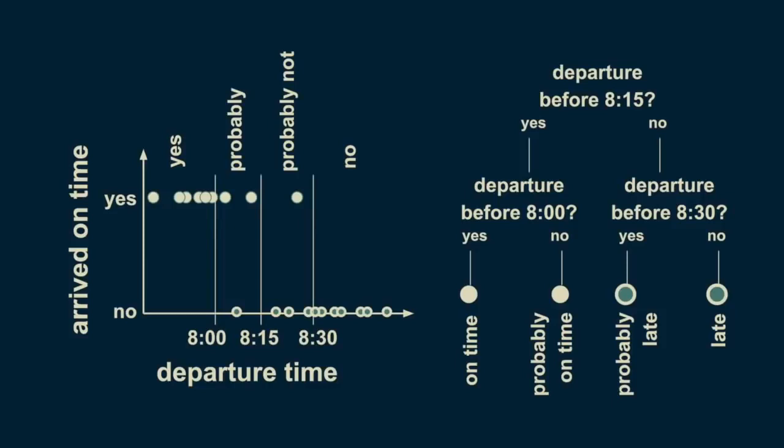This example has a single predictor variable and a categorical target variable. The predictor variable is our departure time, and our target variable is our punctuality — whether or not we're late. Because it has only two distinct values, it's categorical. Decision trees with categorical targets are also called classification trees.